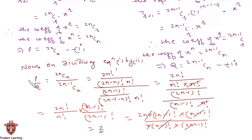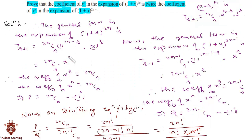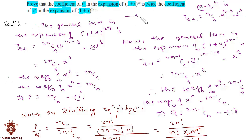Hence we can say that p upon q = 2. This implies that the coefficient of x raised to n in the expansion of (1 + x)^(2n) is twice the coefficient of x raised to n in the expansion of (1 + x)^(2n-1). So this completes our solution.